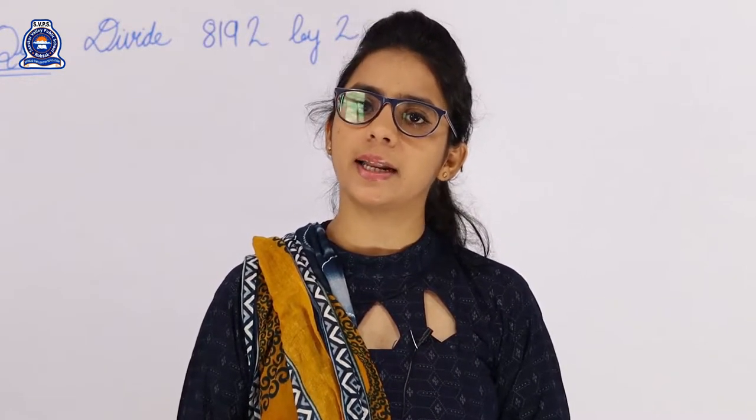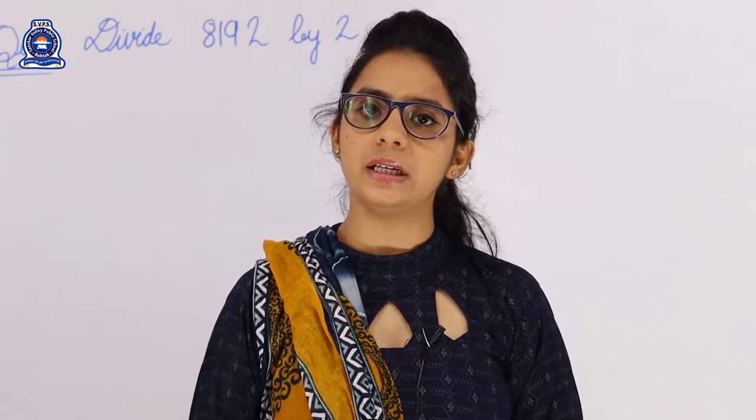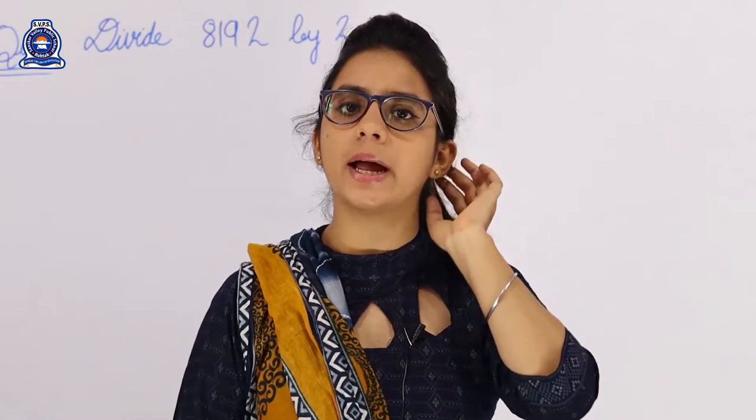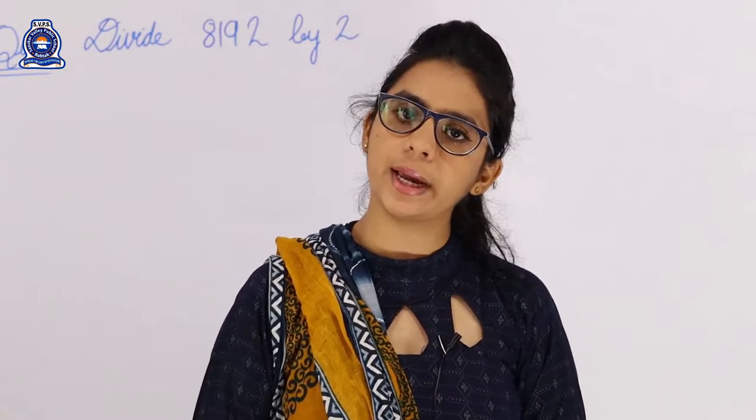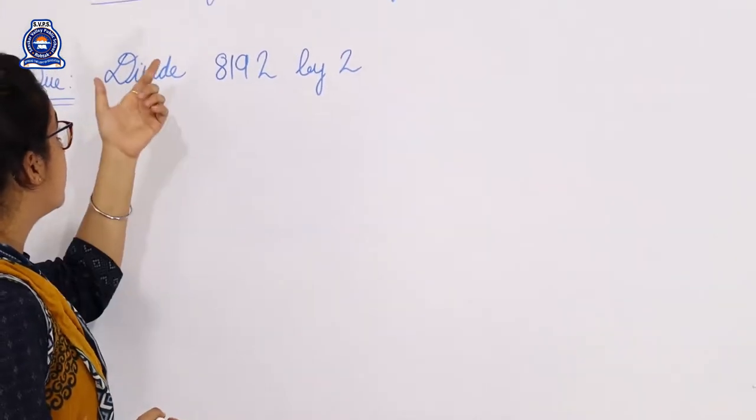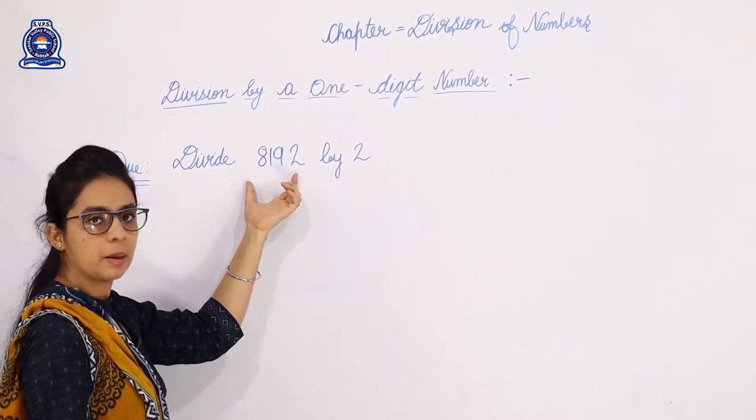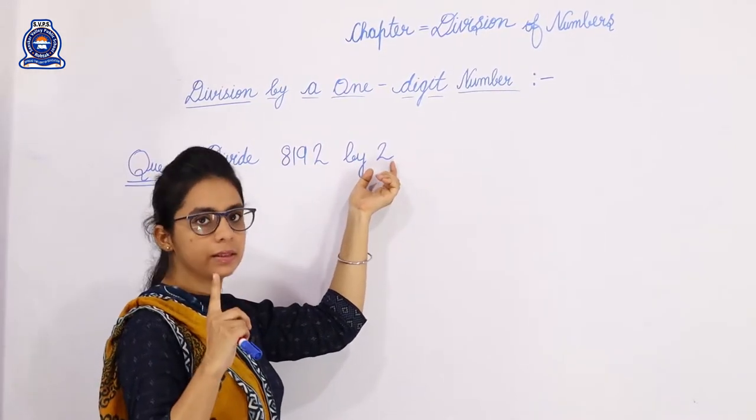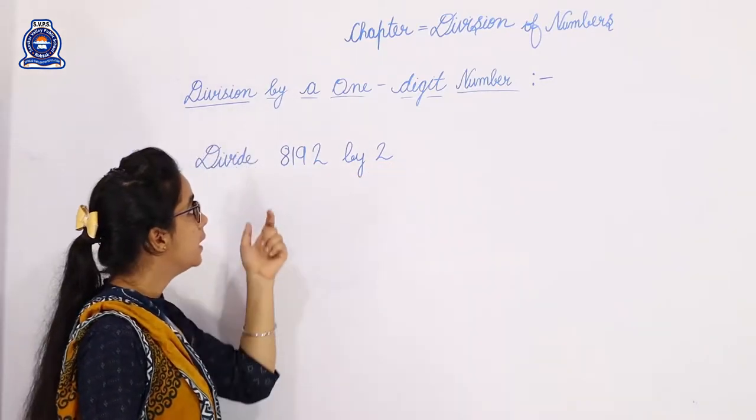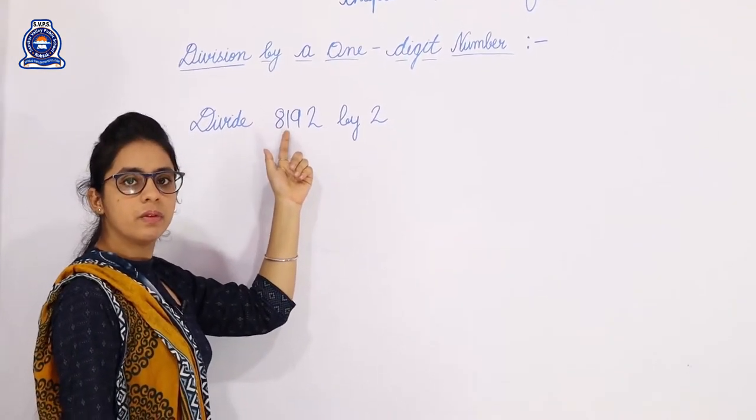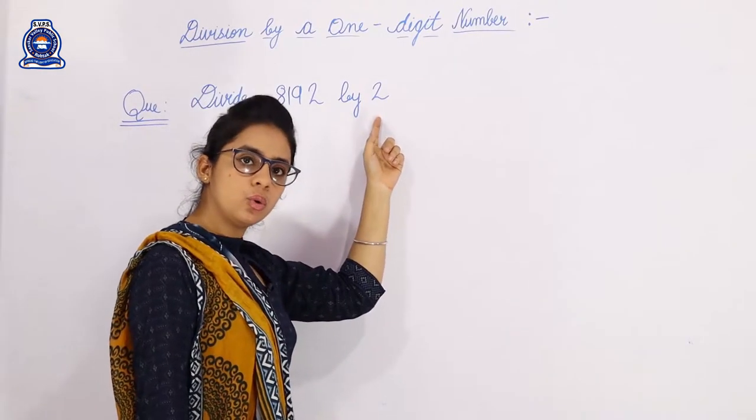Today we start division questions. We'll begin with division by one-digit numbers. There are three types: division by one-digit number, division by two-digit number, and division by three-digit number. Today we start with division by one-digit number, meaning our dividend will be divided by a one-digit divisor. Here dividend is 8192 and our divisor is 2.